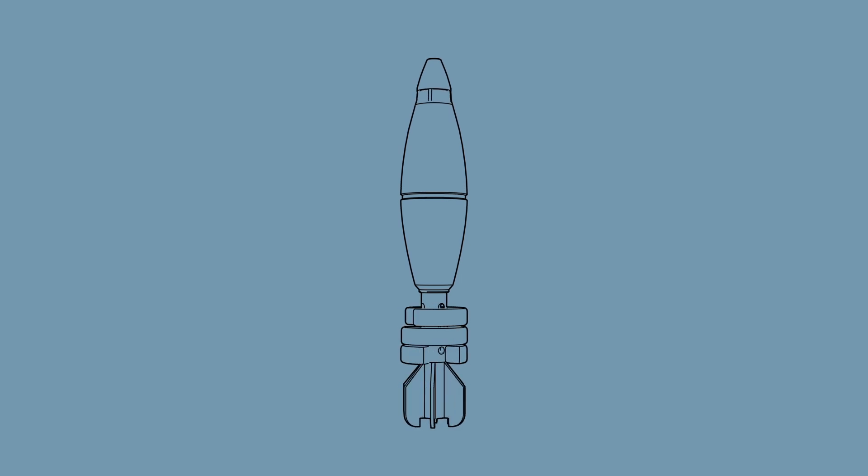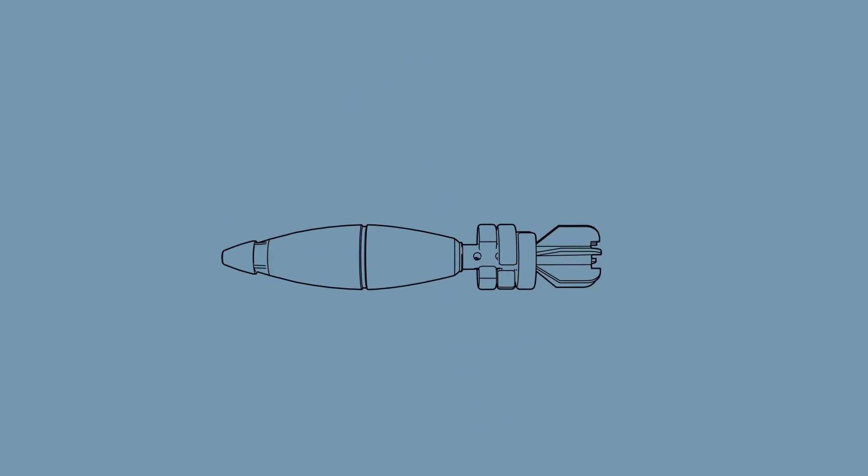The key parts of a mortar projectile are typically the fuse, the explosive payload, the obturating rings, the ignition or propellant cartridge, the propellant charges, and the fins, which stabilize the mortar during flight.